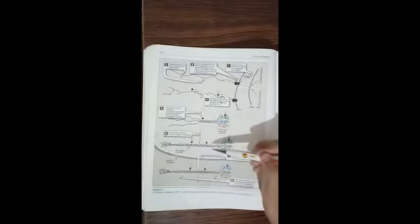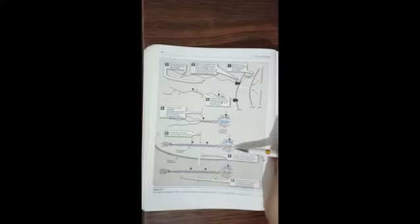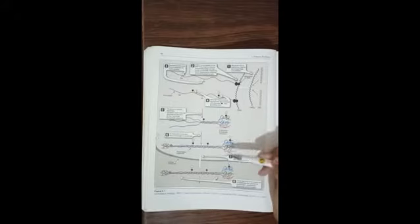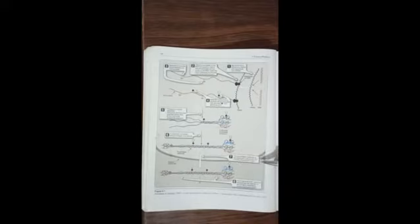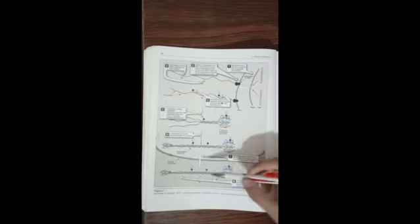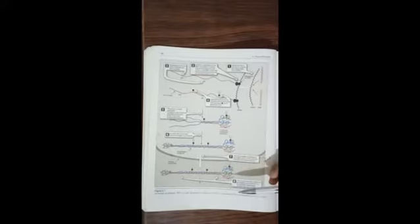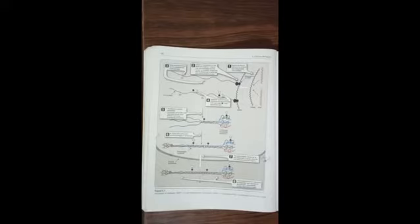The triple helix formation occurs within the endoplasmic reticulum. After that it is secreted out into the extracellular matrix. The N-terminal and C-terminal propeptides are removed by peptidase enzymes, and the resulting structure is called tropocollagen.